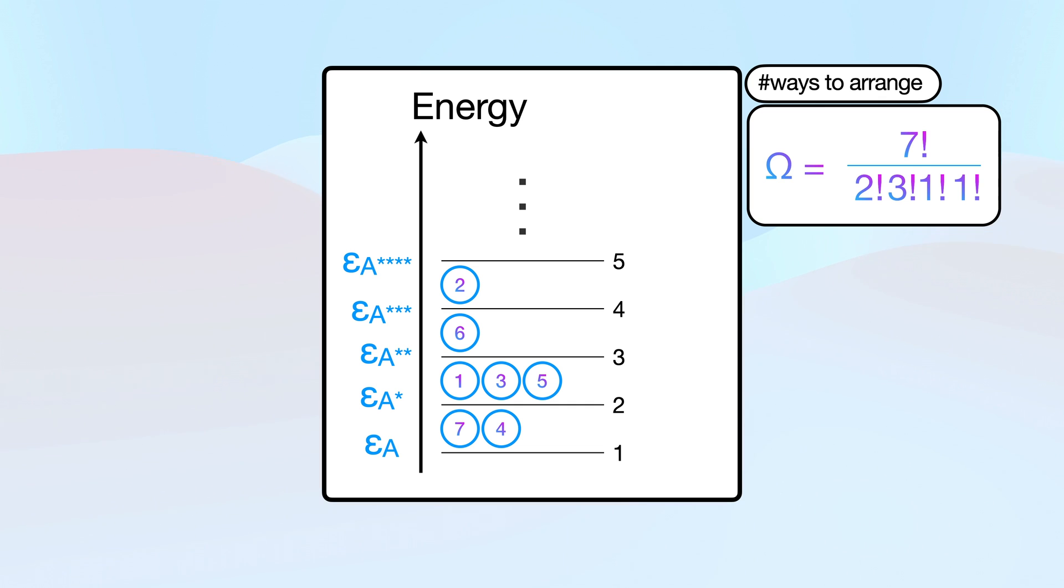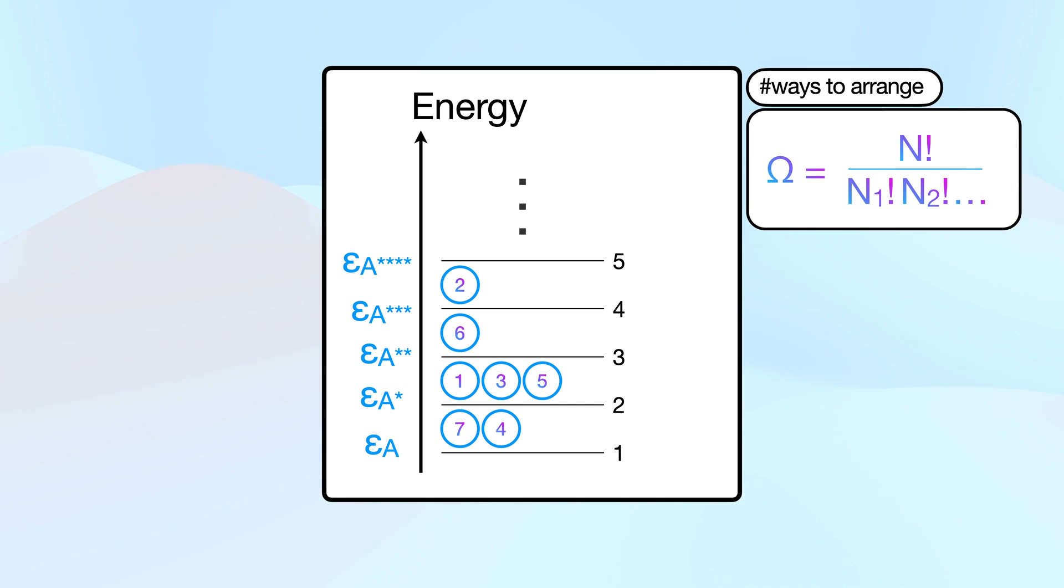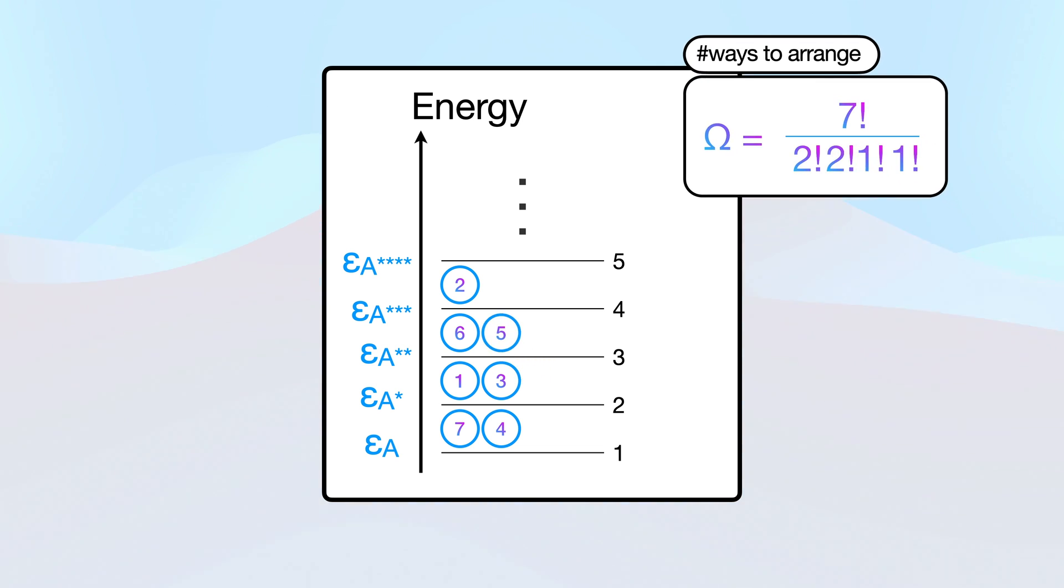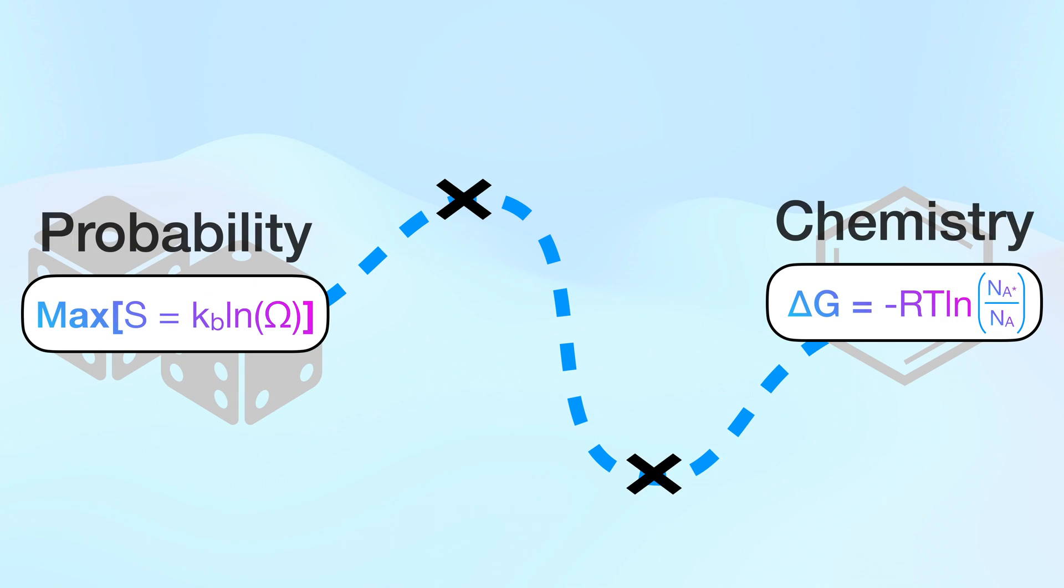So we have to divide out by the number of ways in which they can be arranged in each level. In general, if there are n molecules, we divide them by the possible arrangement in each level, denoted by their subscripts. You may have noticed, different distributions of molecules across the energy levels affects omega, and hence the entropy. And the distribution, in this case, of our chemical reaction can be captured by the ratio between A star and A. Can you start to see the connection now?